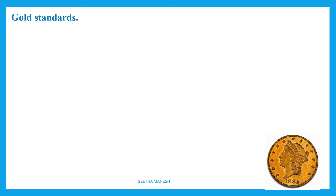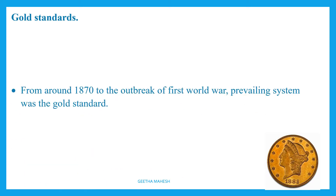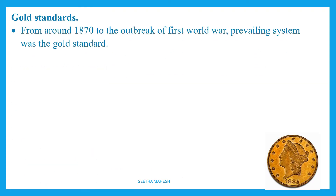Just as we use currency notes and coins as a medium of exchange today, in the past they used gold coins as a medium of exchange. That system we call the gold standard. The gold standard existed between 1870 to 1914.